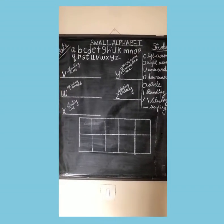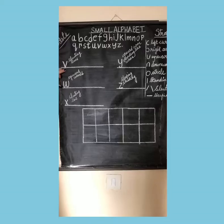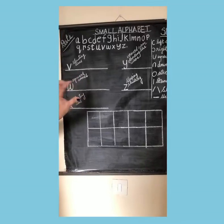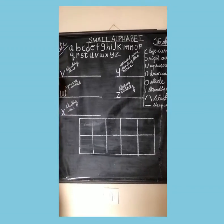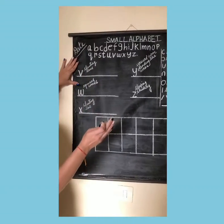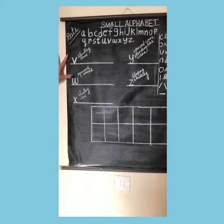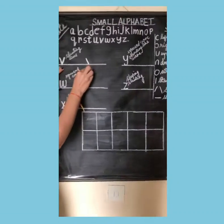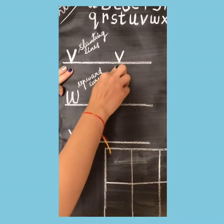Let's start with small alphabet V. You all know how to write the big alphabet V — it's the same thing but smaller. To write small alphabet V, you need two slanting lines: one downward slanting line and one upward slanting line. Make a small slanting line going down, and wherever it ends, make a slanting line going upwards. This is small alphabet V.